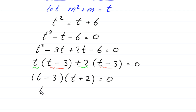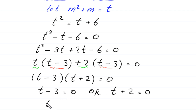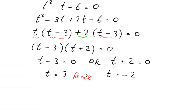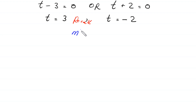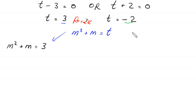From (t - 3)(t + 2) = 0 we get t = 3 or t = -2. Recalling that m² + m = t: when t = 3, the equation becomes m² + m = 3; when t = -2, the equation becomes m² + m = -2.